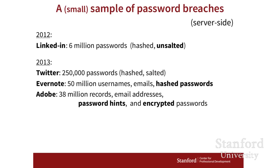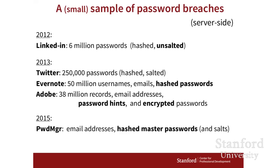250,000 passwords were stolen from Twitter. Evernote had an issue where hashed passwords were revealed. Adobe had an interesting breach where encrypted passwords — not hashed passwords — were revealed, in addition to the password hints. As a result, the password hints actually helped attackers recover the original passwords. And then a more recent example: in 2015, a fairly common password manager had an issue where hashed master passwords and salts were compromised. In some cases that can enable what's called an offline dictionary attack, where an attacker can try lots of words in the dictionary until he finds one that hashes to the user's password, essentially revealing the user's password.